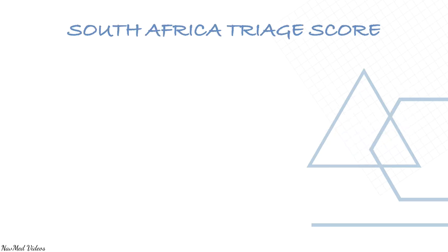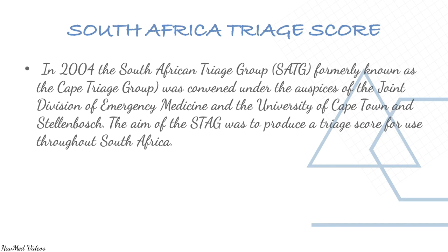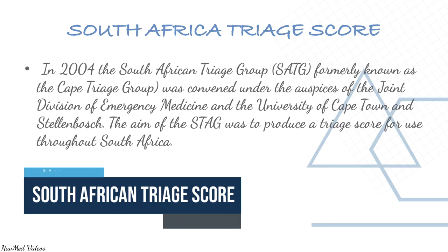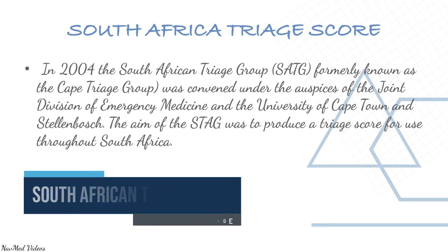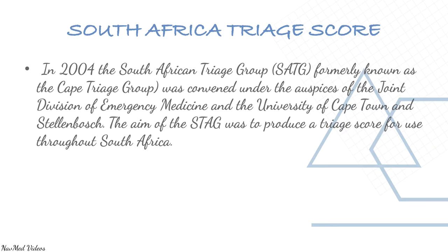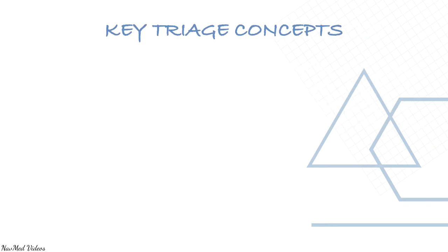In 2004, the South Africa Triage Group — formerly known as the Cape Triage Group — was convened under the auspices of the Joint Division of Emergency Medicine and the University of Cape Town. The aim of the South Africa Triage Score and the South Africa Triage Group was to produce a triage score for use throughout South Africa.